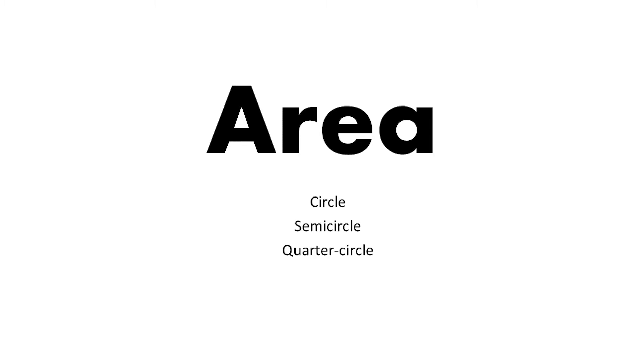Since calculus can be broken up into slope and area, make sure you know the area formulas for elementary geometric shapes: circle, semicircle, quarter circle, trapezoid, triangle, and rectangle. Volume formulas are also important — specifically the volume of a right cylinder, a cone, and a sphere. These are used a lot in application problems, so memorize them.